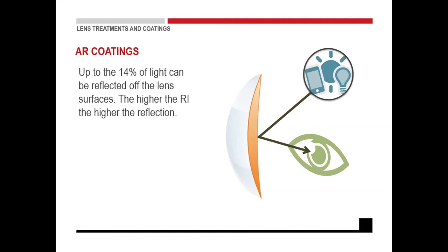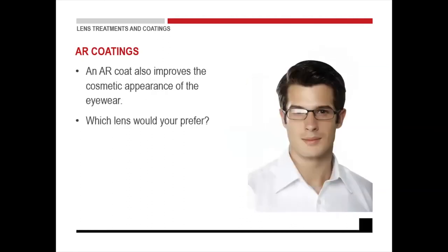An anti-reflexive coating cuts out all the background noise in terms of reflection, and it gives your eyes one specific clear image to focus on, making it more relaxing on your accommodative system. If you look at this image, his right lens has no anti-reflex coating — you see everything reflecting in that lens. The other side has an anti-reflexive coating, so there are no reflections. He can see through that lens without any disturbances, and when I look at him, I can see his eyes rather than reflections.